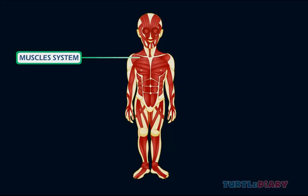Muscle system. We need muscles to move. Our muscle system is made of tissues that help us to move our body parts. Without muscles, we cannot walk, talk, smile, run or jump.